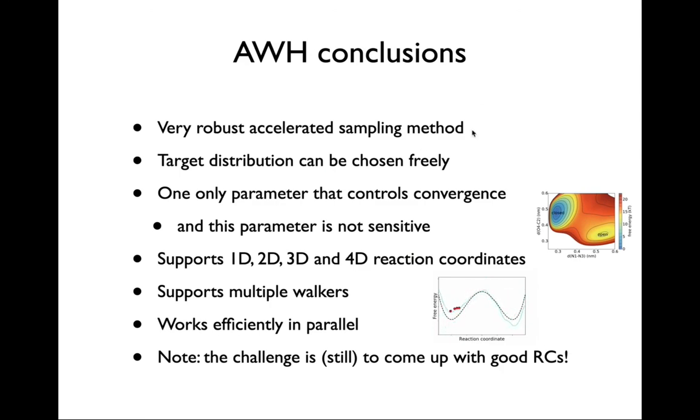To conclude, we have a very robust accelerated sampling method here in AWH which has few parameters. There's good checks to check if the method actually converges or not. There's only a single parameter that controls convergence, this initial update size, and it's not very sensitive. It supports 1D up to 4D reaction coordinates. I've only shown 1D here; there's an example of a 2D case for DNA shown here on the side. It supports multiple walkers which can lead to quite high parallelization efficiency and super-linear scaling when going from one to more, which makes it work efficiently in parallel. You can freely choose the number of ranks to use, which is also nice. But as a general note, the challenge is still to come up with a good reaction coordinate. That can be a large problem with any system, but at least now if you have those reaction coordinates we have a very good method in GROMACS that can sample such reaction coordinates quite efficiently. With that I would like to thank you for your attention.